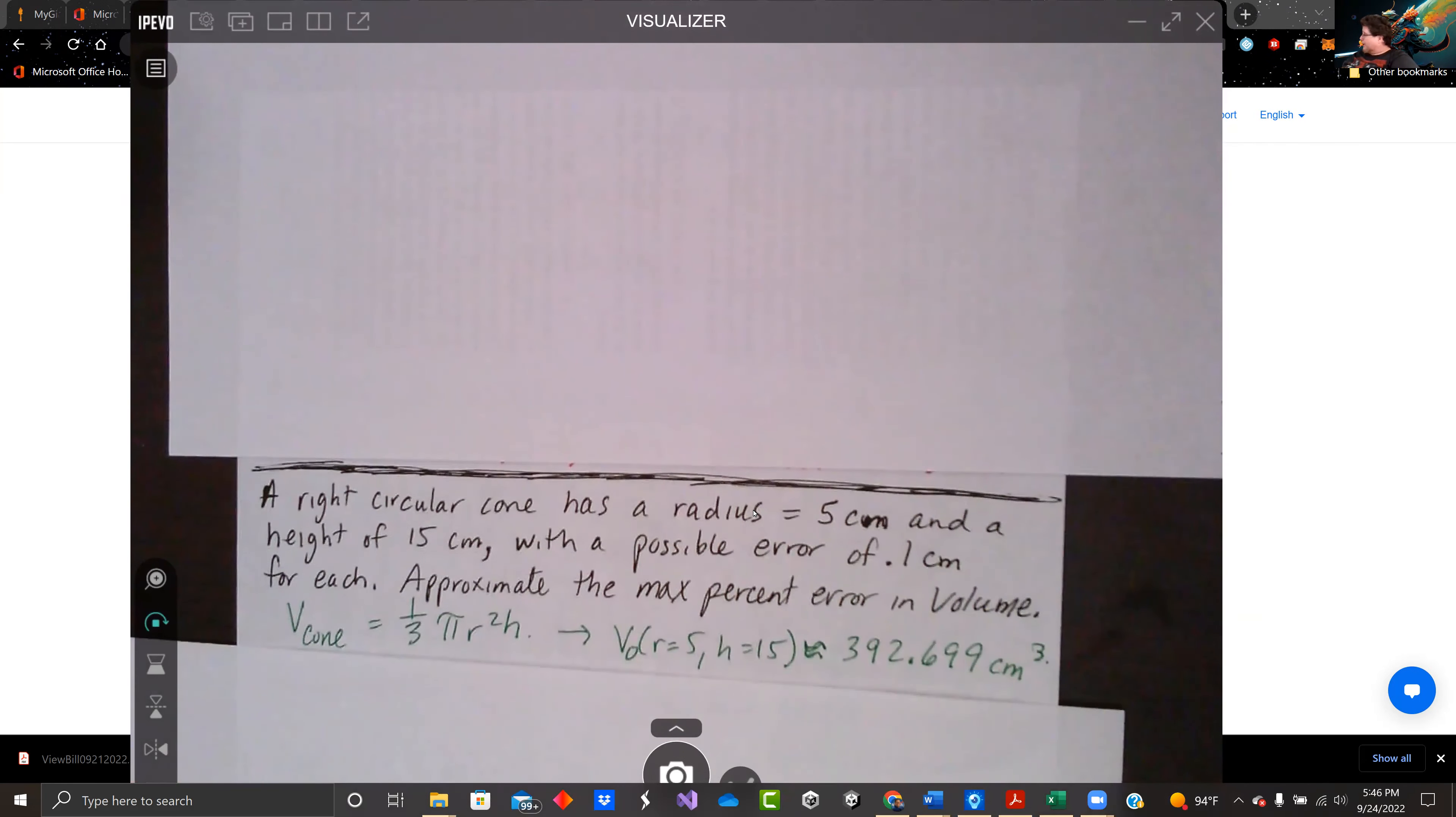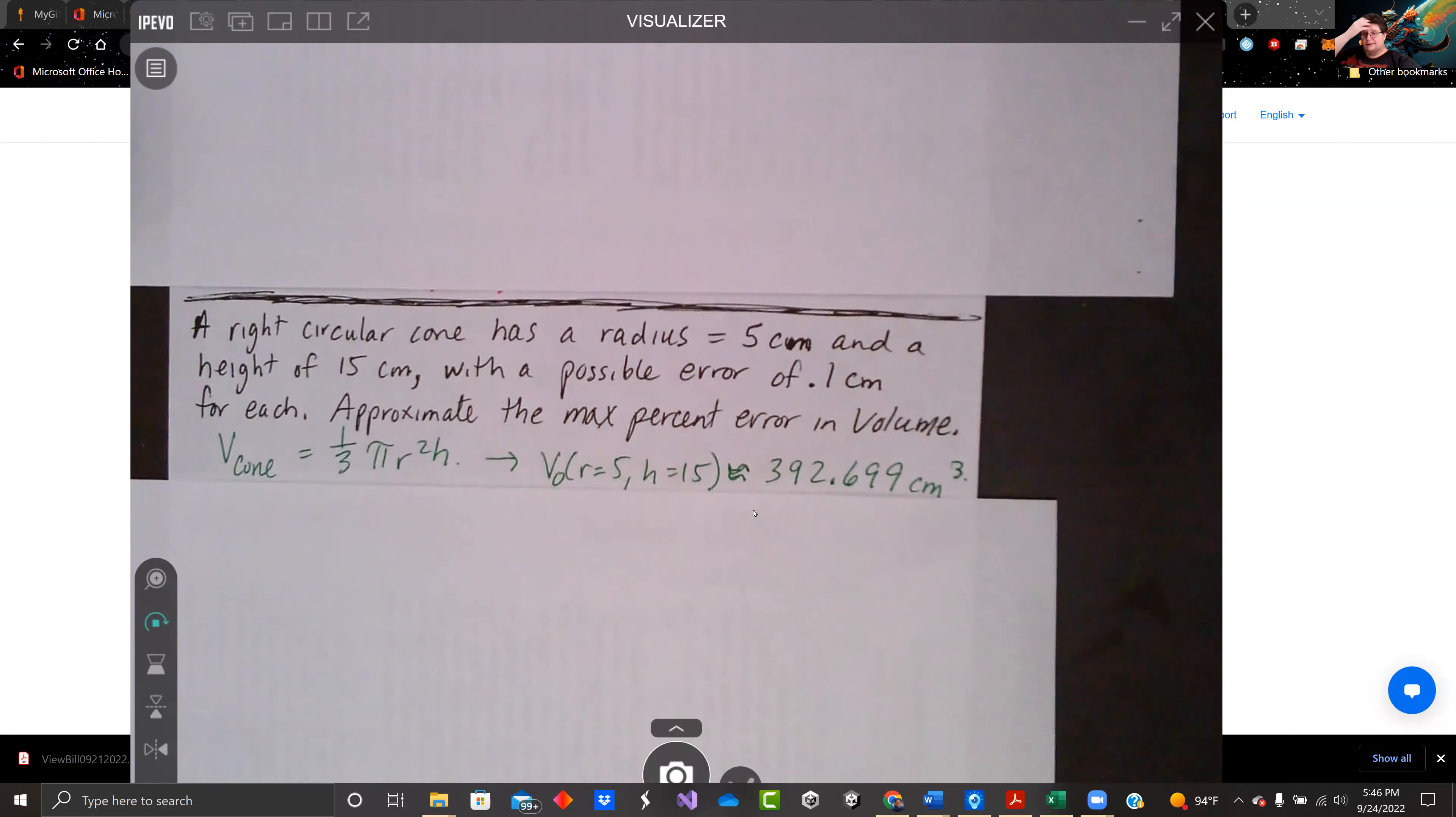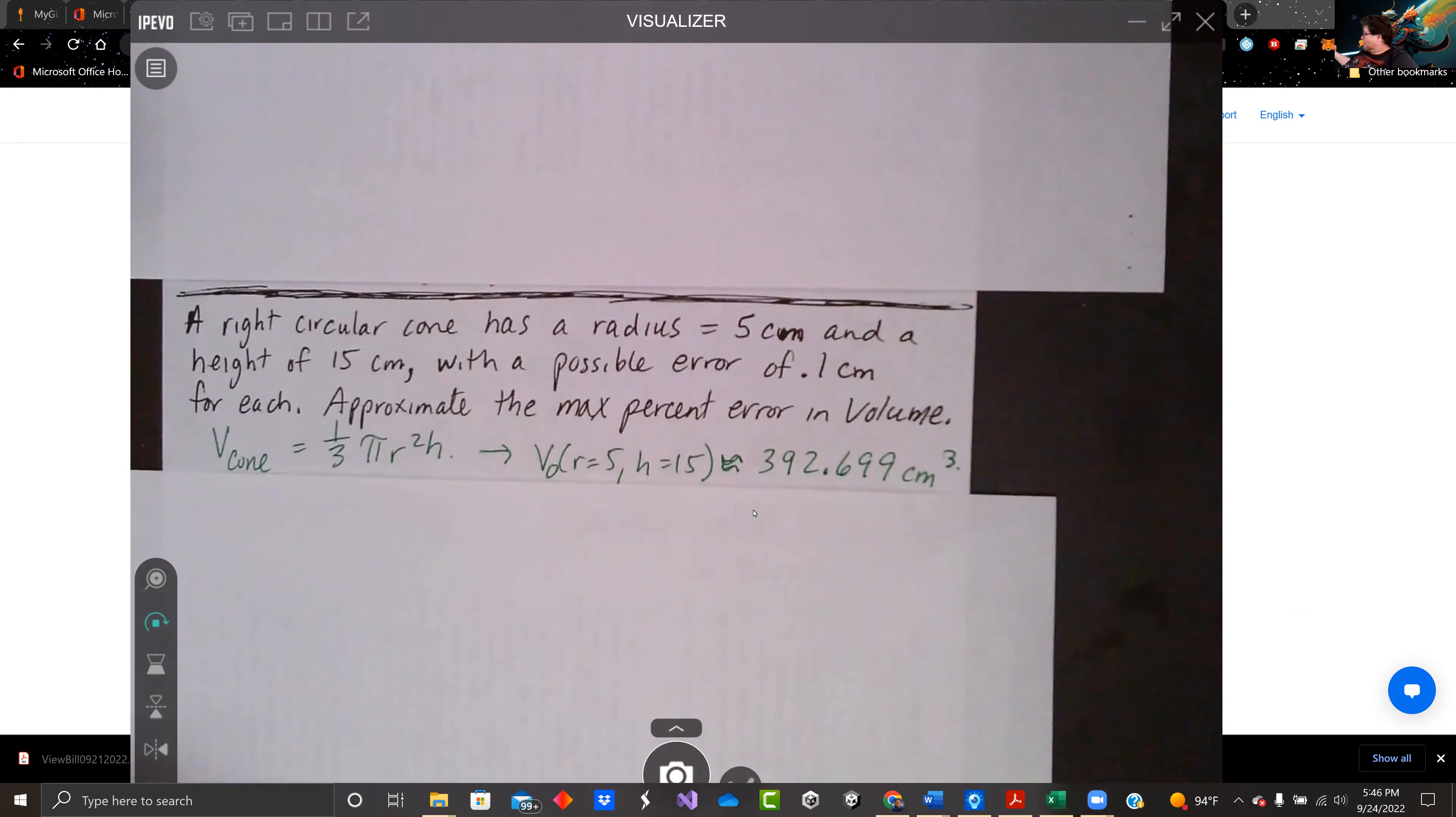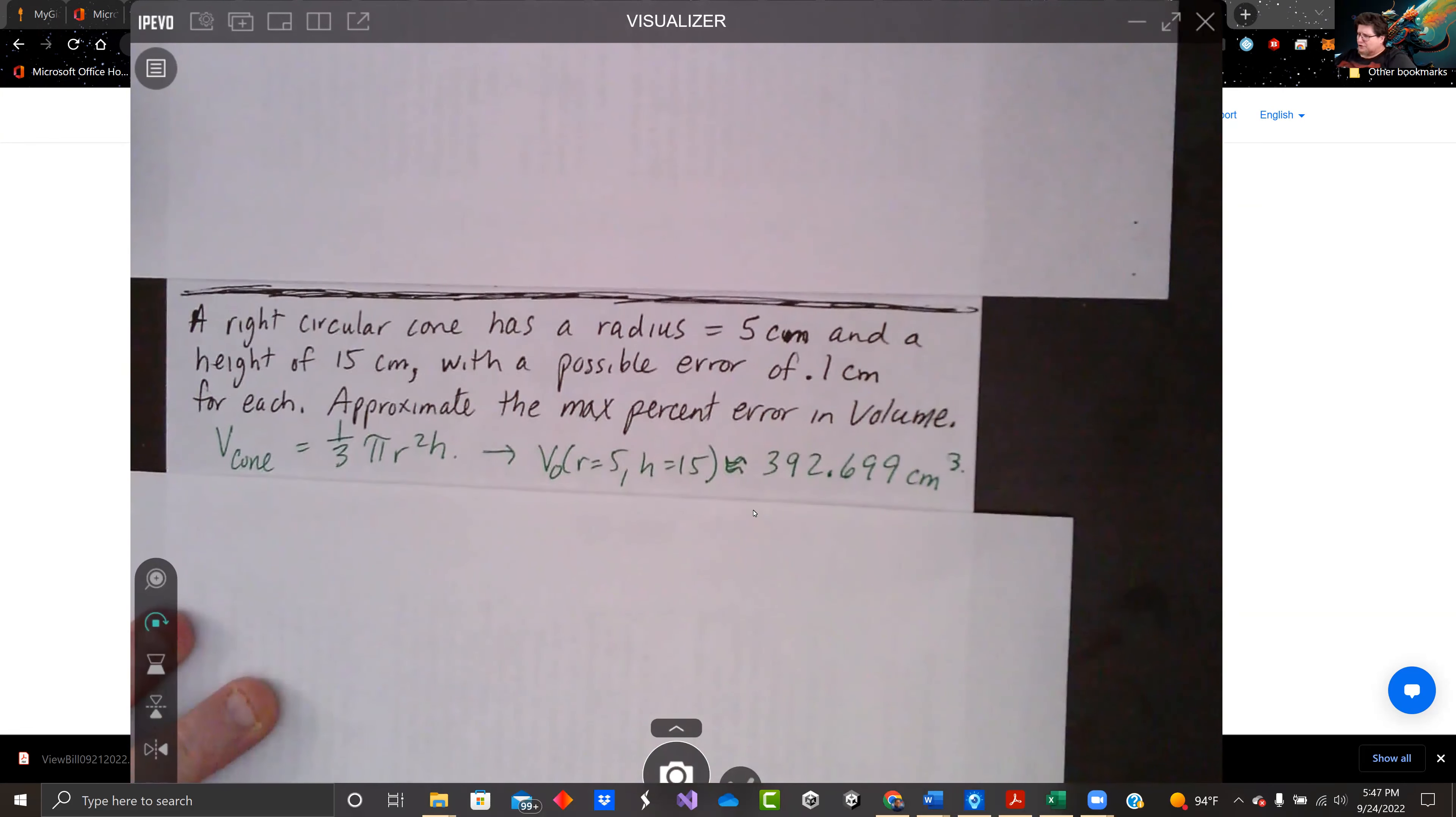So let's do a right circular cone. A right circular cone has a radius of 5 centimeters and a height of 15 centimeters with a possible error of 0.1 centimeters for each. Approximate the max percent error in the volume here. So the volume of a cone is, you know what a right circular cone is, right?